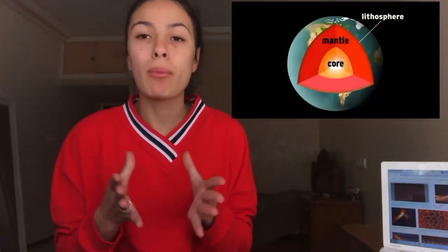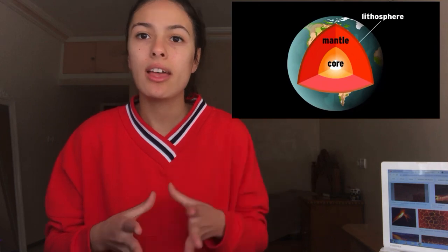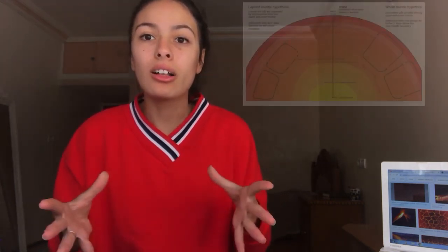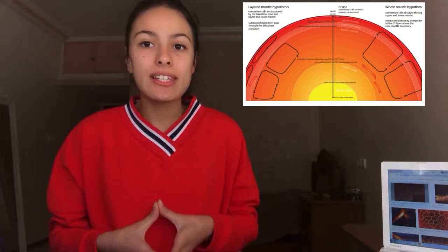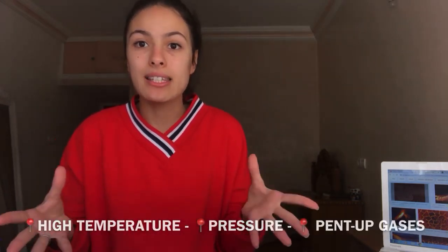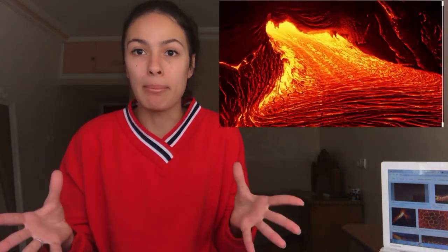Deep inside Earth, between the molten iron core and the crust, there is a solid material forming part of the surface called the mantle. Under such extremely high temperature, pressure and pent-up gases cause the rock to melt and then become liquid rock, or magma.